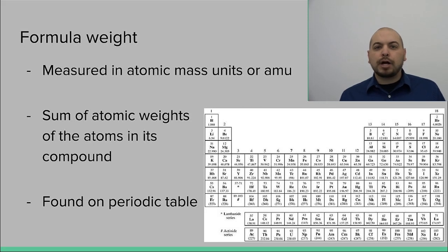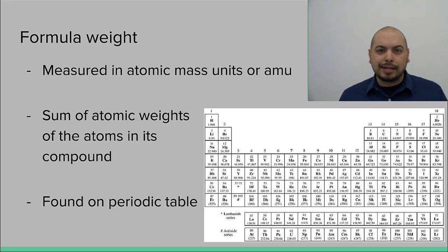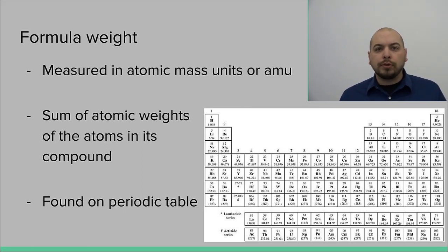So let's first talk about formula weight. The formula weight of any compound is simply equal to the mass of every atom in that compound. This is a single unit of this compound, so in the case of covalent molecules it's one molecule, and in the case of ionic compounds it's one formula unit. So essentially we're looking at the exact mass of exactly one of these species.